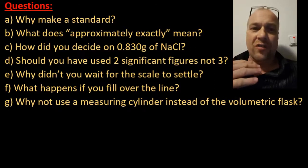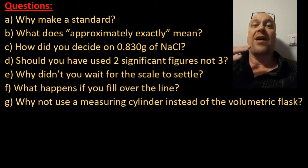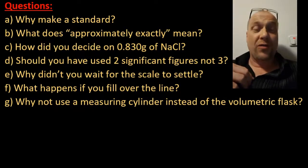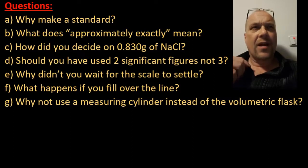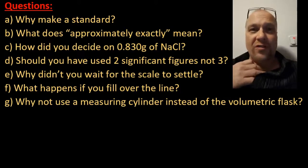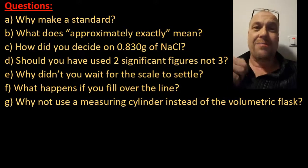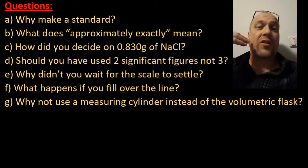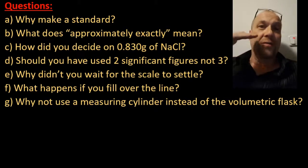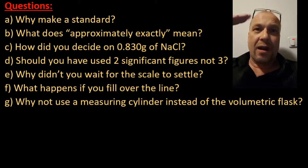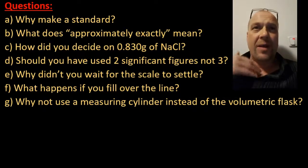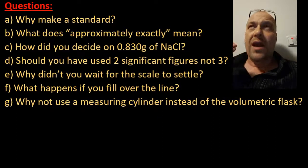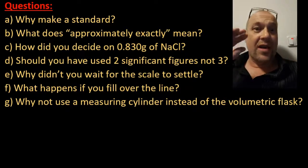Why didn't I wait for the scale to settle? It was only going to get worse and worse — unless I sucked all the air out of the room or put a bucket over the scale, but then I couldn't read it. What happens if you fill over the line? The chemistry teacher joke is it's okay — just take out the extra water, but not the extra salt. In reality, you pour it away and start again. Don't go over that line, because you'd have introduced a systematic error: instead of 100 millilitres total volume, it would be, say, 101 millilitres, and your concentration is always going to be lower than expected. And why not use a measuring cylinder instead of a volumetric flask? Because a volumetric flask is more accurate and less uncertain than a measuring cylinder. And we're done.